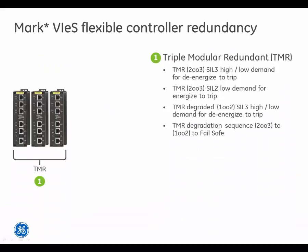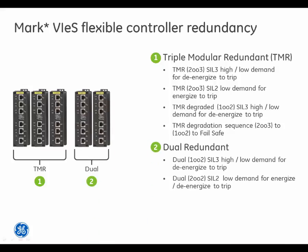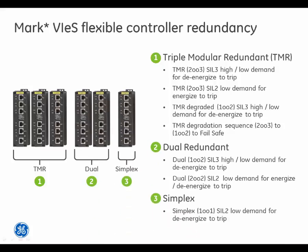Mark 6ES Flexible Controller Redundancy options include triple modular redundant (TMR), dual redundant, or simplex. Simplex, dual, or triple redundant I/O networks and processors can be mixed and matched over the Ethernet backbone depending upon SIL and redundancy requirements. I/O can be distributed locally or remotely, and you only need to install and maintain the level of redundancy required.